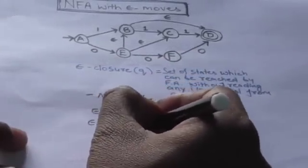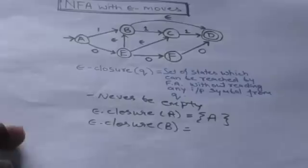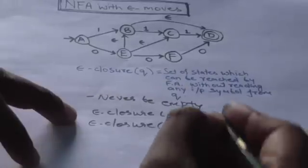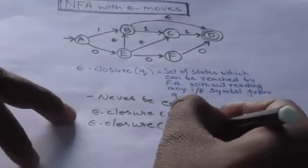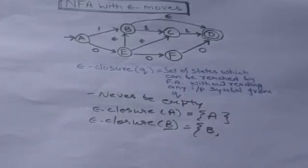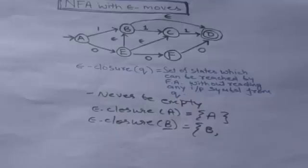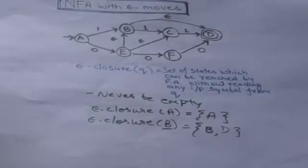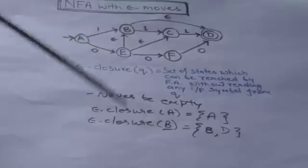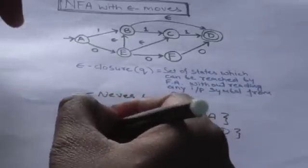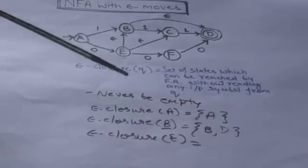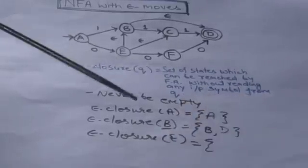Now let us take a slightly more complex example: empty closure of B. As with state A, the state itself must be included in the set, so first we include B. Then we look at the states the machine can reach with empty moves — there is only one such state, which is state D. From D there is no empty transition, so the empty closure of B is {B, D}.